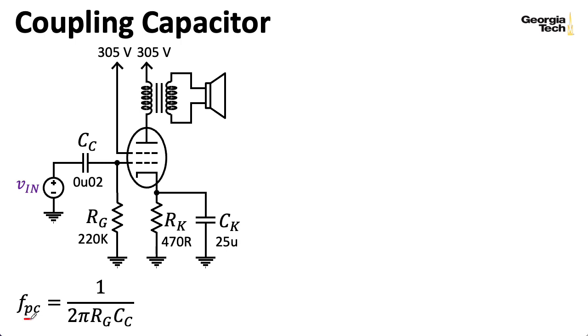And if we compute the frequency associated with that filter, I'm using FPC here to represent the pole of this low-pass filter and C to represent the fact that it's coming from the coupling capacitor. If we plug these values into one over 2π yada yada usual formula, we wind up with 36 hertz. Remember the lowest note on an electric guitar in standard tuning is 82 hertz. So we don't really need to worry about this too much from a musical standpoint.